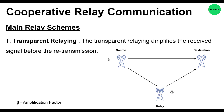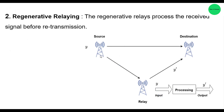The next type is the regenerative relay. The regenerative relay processes the received signal at the relay and retransmits it to the destination. The source broadcasts signal y to the destination as well as to the relay. The relay receives the signal, then decodes and demodulates it, processes it, re-encodes, and remodulates before sending it back to the destination. This is what happens in regenerative relaying — it regenerates the signal before transmitting to the destination.